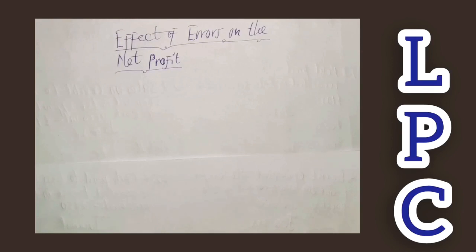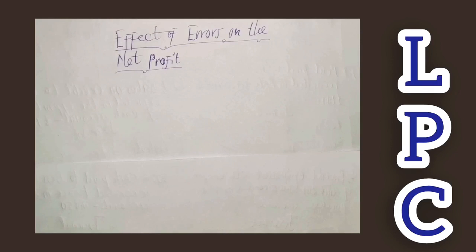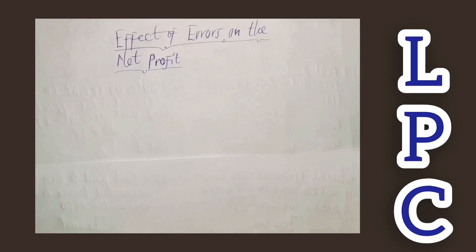If there is any error on the net profit, all the items in the income statement are affected, and you must take them into consideration by making proper adjustments — correcting and making changes where the error is found. We are going to look at them one by one: if there's an error in an item in the income statement, how will it impact the net profit that you're going to report to management and stakeholders who are interested in this financial statement?